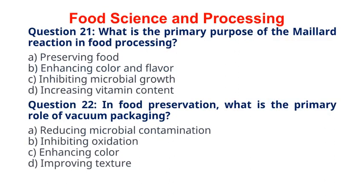Question 21. What is the primary purpose of the Maillard reaction in food processing? A. Preserving food. B. Enhancing color and flavor. C. Inhibiting microbial growth. D. Increasing vitamin content. The correct answer to question 21 is option B. Enhancing color and flavor.